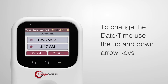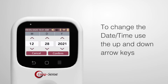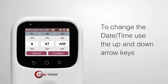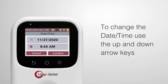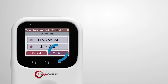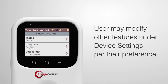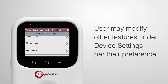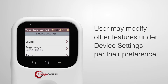To change the date and time, use the up and down arrow keys to set the appropriate month, day, year, or hour, minutes, AM, PM, then confirm. Users may modify other features under device settings per their preference.